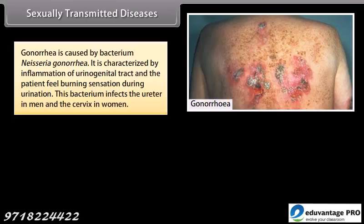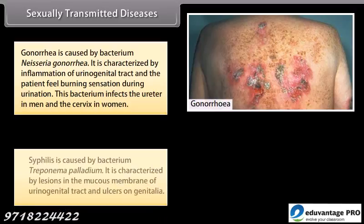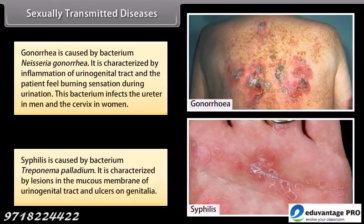Gonorrhea is caused by the bacterium Neisseria gonorrhea. It is characterized by inflammation of the urinogenital tract, and the patient feels a burning sensation during urination. This bacterium infects the ureter in men and the cervix in women. Syphilis is caused by the bacterium Treponema pallidum. It is characterized by lesions in the mucous membrane of the urinogenital tract and ulcers on the genitalia.